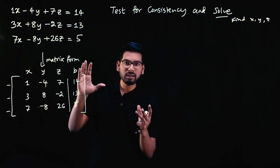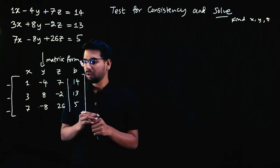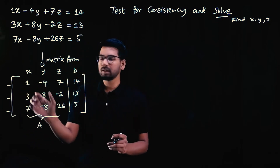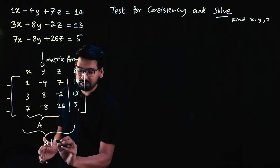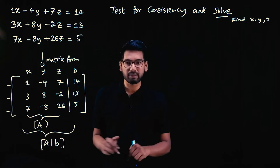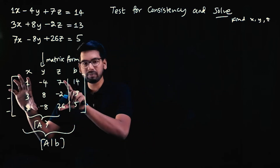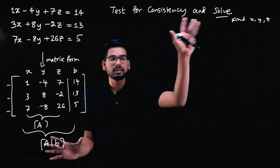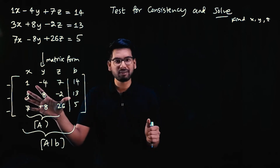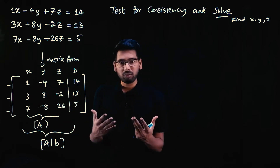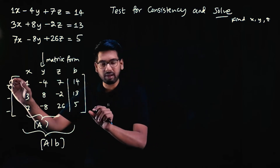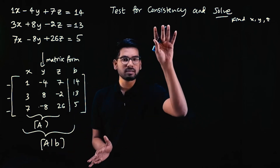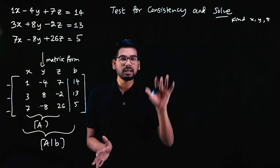This is the matrix form of the system of equations — a 3×3 system. We have the coefficient matrix A (containing coefficients of x, y, z) and the augmented matrix [A|B] which includes the RHS column as well. The consistency condition is: rank of A equals rank of augmented matrix AB.